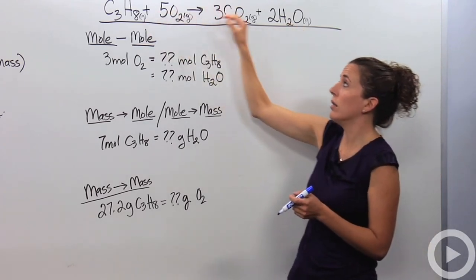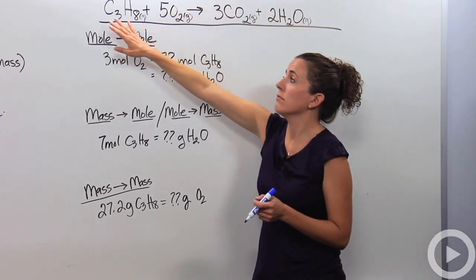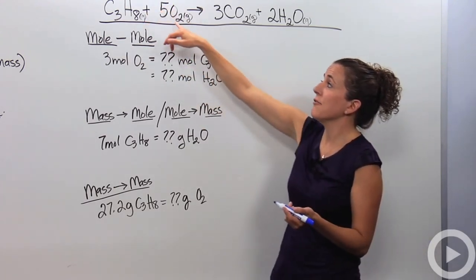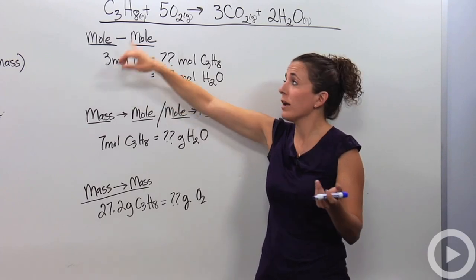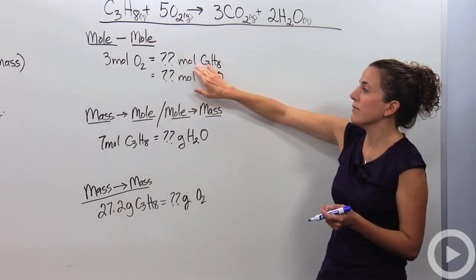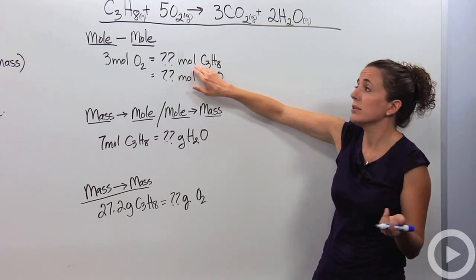If this were all in, meaning if we started with 1 mole and 5 moles. But let's say we didn't start with 1 mole and 5 moles. Let's say instead of 5 moles, we started with 3 moles because we're not going to always have these relationships. How many moles of C3H8 am I going to need to react with that?